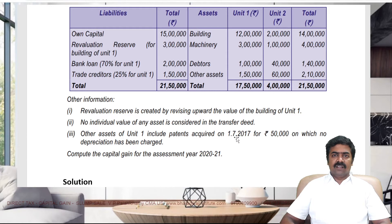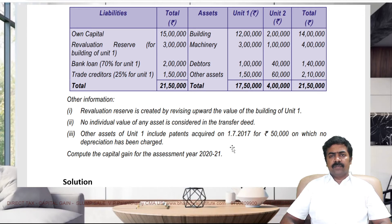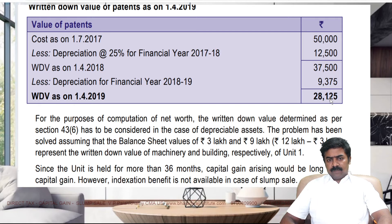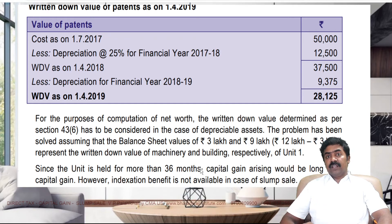The patent was purchased in July 2017, so for financial year 2017-18, full depreciation can be claimed under block of assets method under section 32. For 2018-19, again full depreciation can be claimed. Let us prepare a working note: cost of patent is 50,000. Depreciation for the first year: 50,000 × 25% = 12,500. Depreciation for the second year: 37,500 × 25% = 9,375. WDV at beginning of 2019-20 is 28,125. For the purpose of computing net worth, WDV is determined for depreciable assets. Since the unit is held for about 15 years — more than 36 months — it is a long-term capital gain.